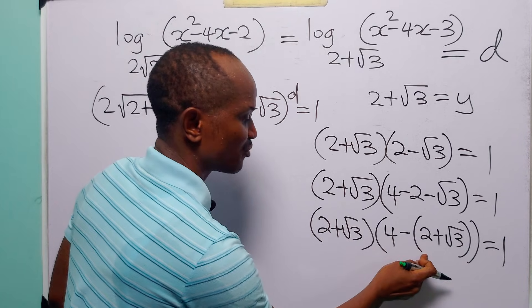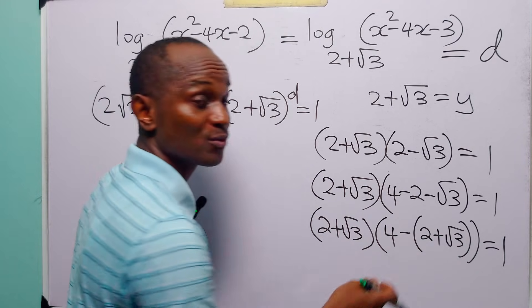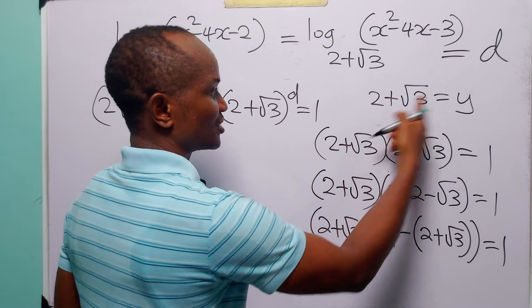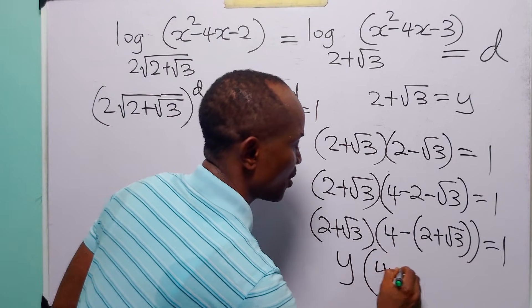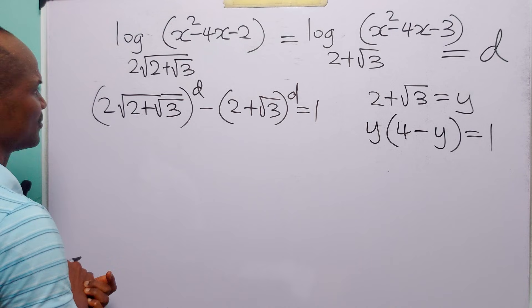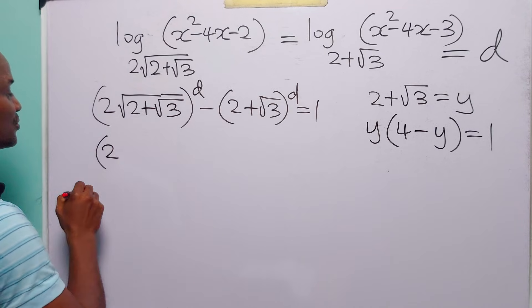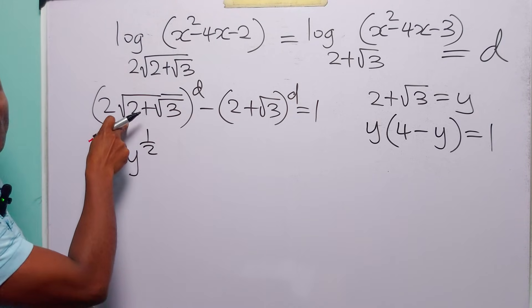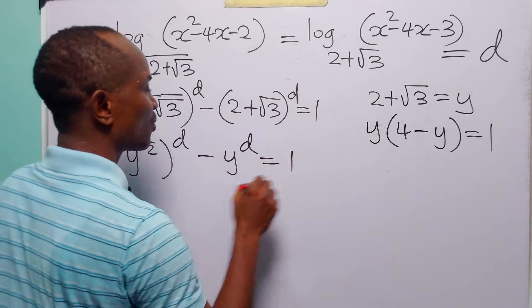Expanding the bracket gives minus 2 plus root 3, and minus root 3. Since 2 plus root 3 equals y, from here we have that y times 4 minus y equals 1. Now let us rewrite the main equation in terms of y. We have 2 times y to the power one-half — the power of one-half is because of the square root — so we have: 2 times y^(d/2) minus y^d equals 1.